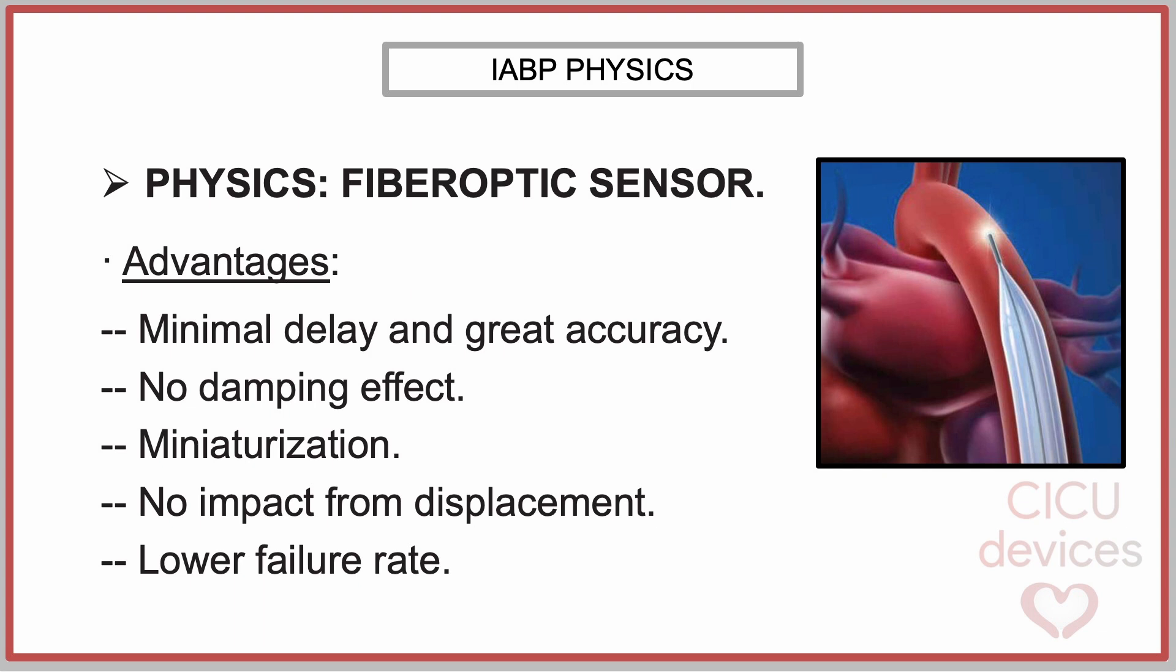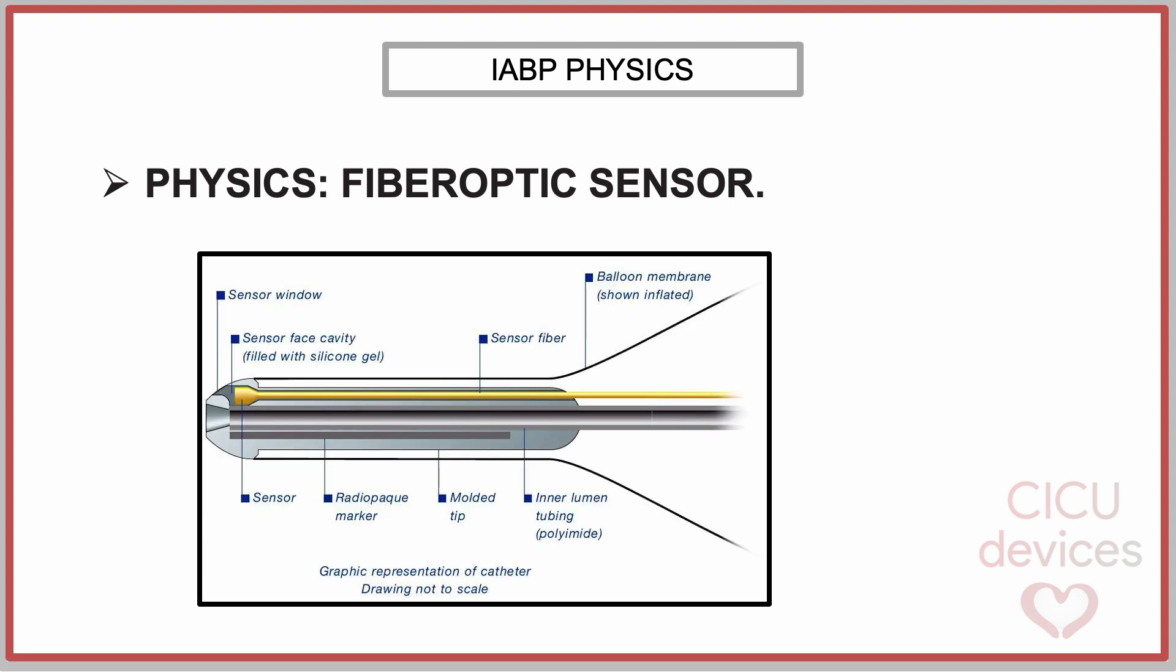Minimal delay, greater accuracy, no damping effect, no changes due to the height of the external sensor, increased miniaturization capability resulting in a reduced catheter size, lower failure rates such as those caused by catheter lumen thrombosis. This figure shows the location of the fiber-optic pressure sensor at the distal tip of the IABP catheter.